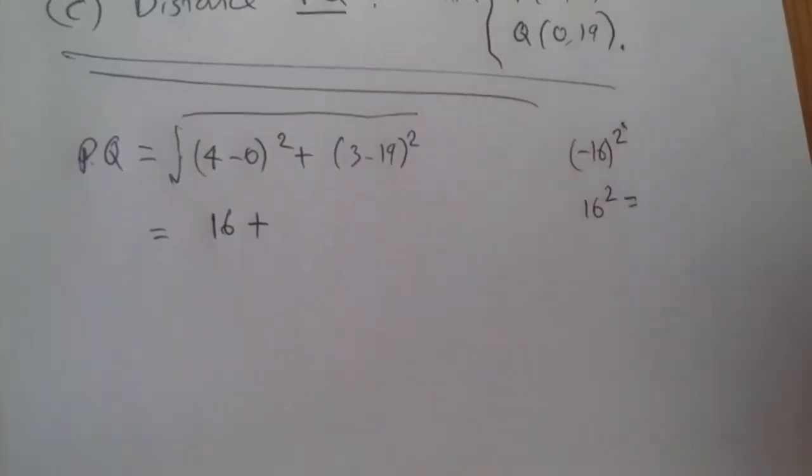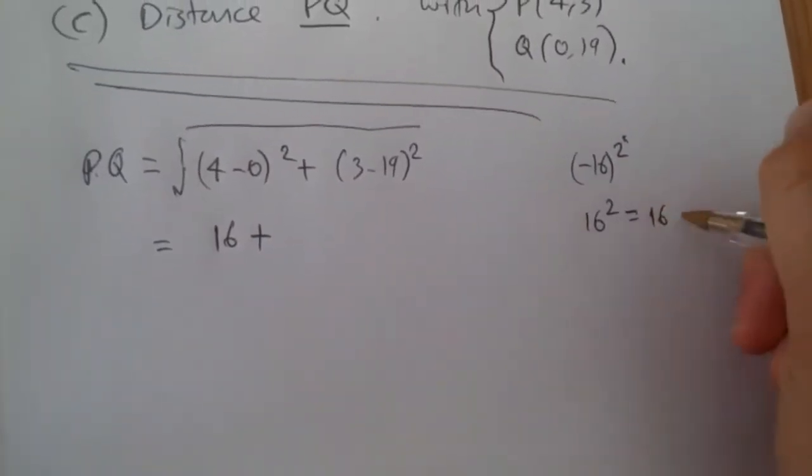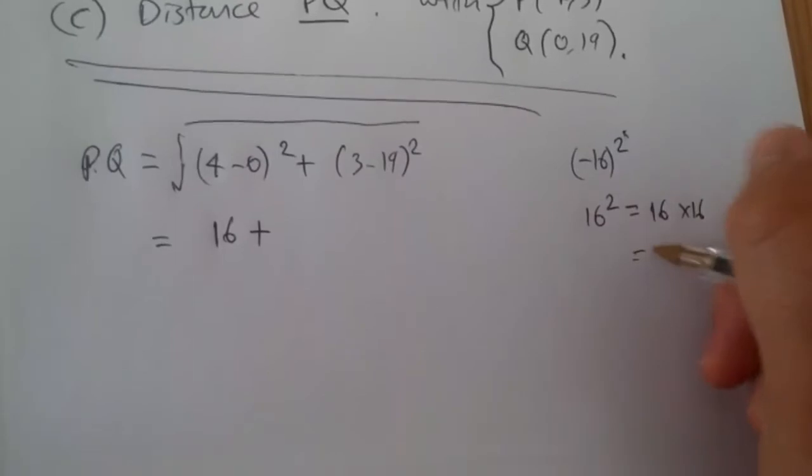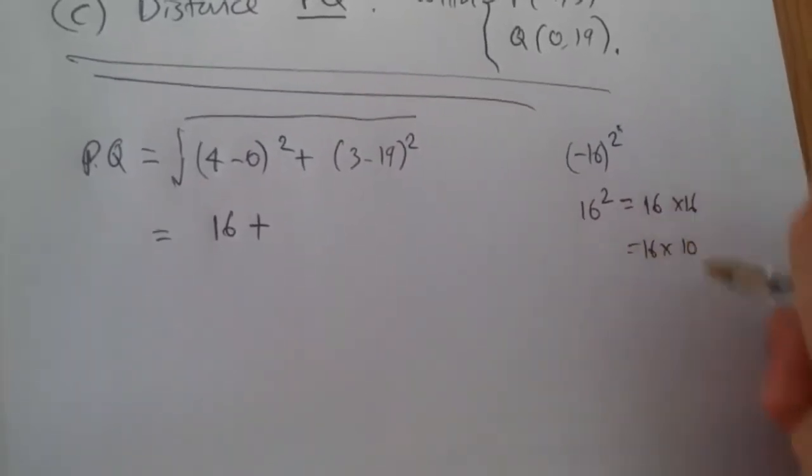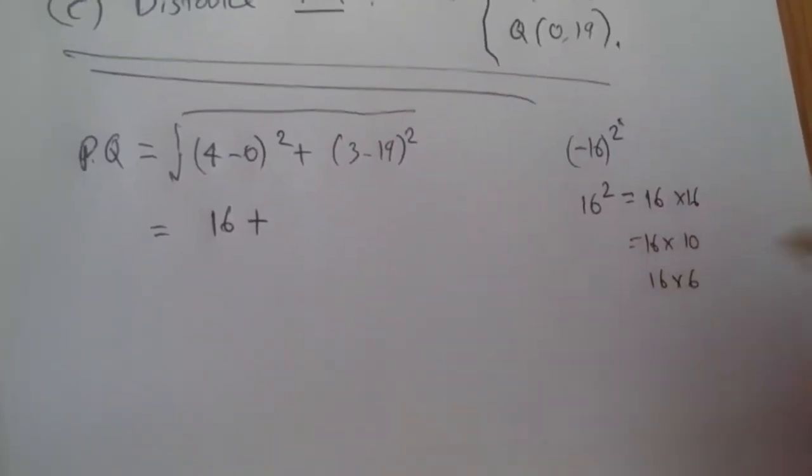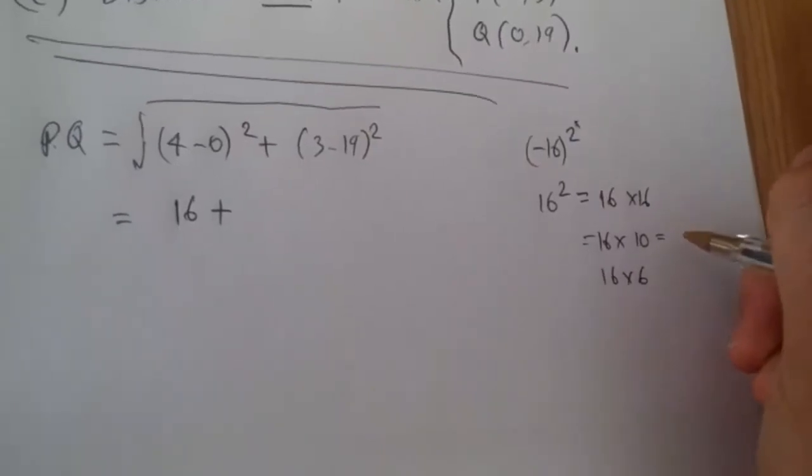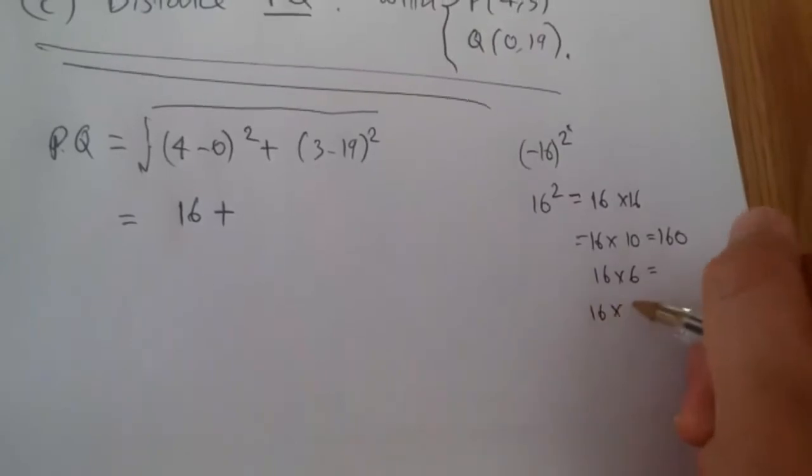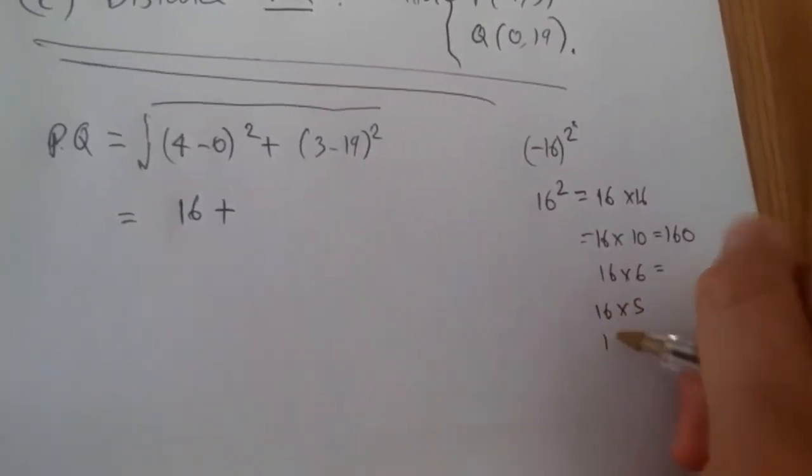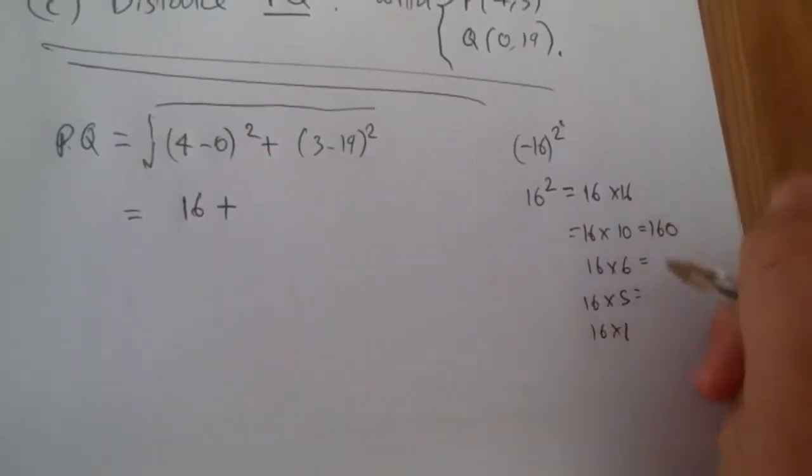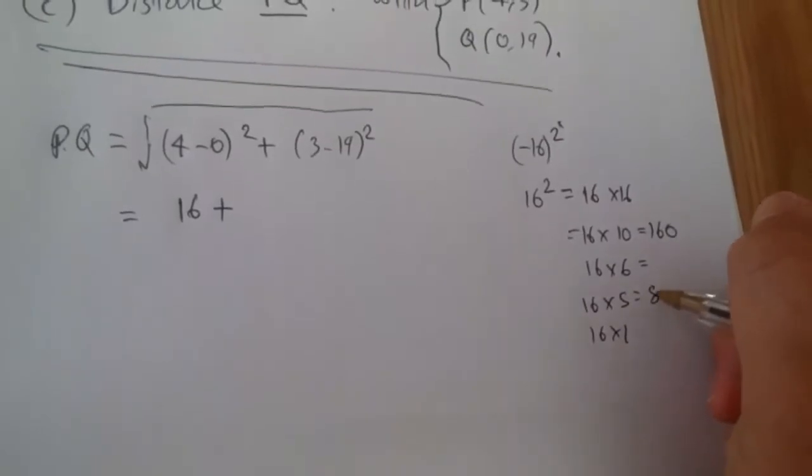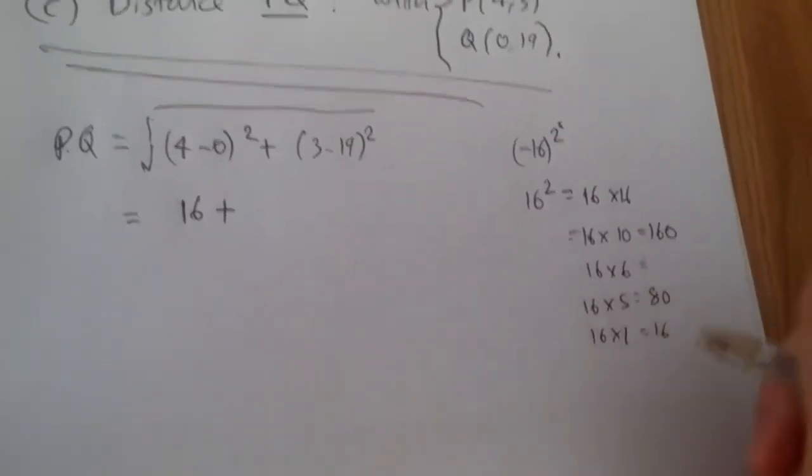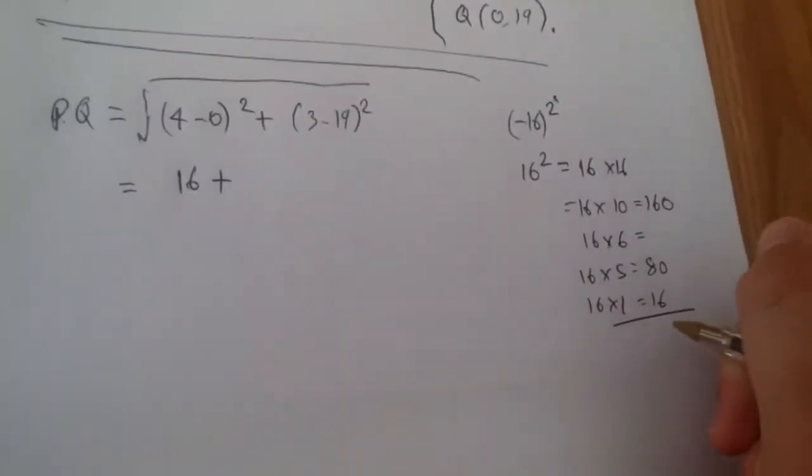the easiest way to do this, 16 times 16, is firstly, 16 times 10, and then 16 times 6. This one, 16 times 10 is 160. 16 times 6, well, another one easier one I'll say, is times it by 5, and then times it by 1. We know half of 160 is 80. 16 is just 16.